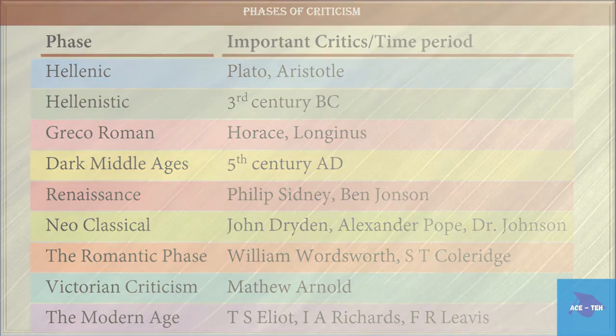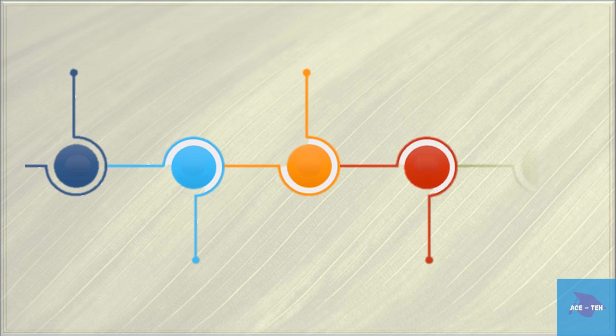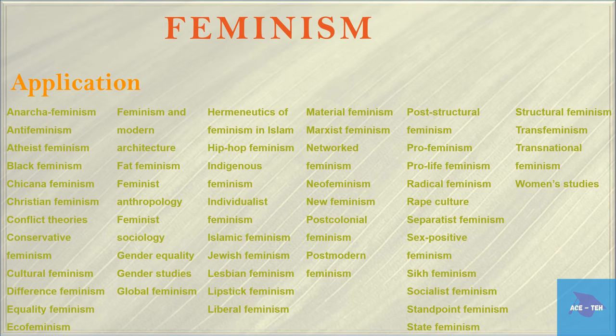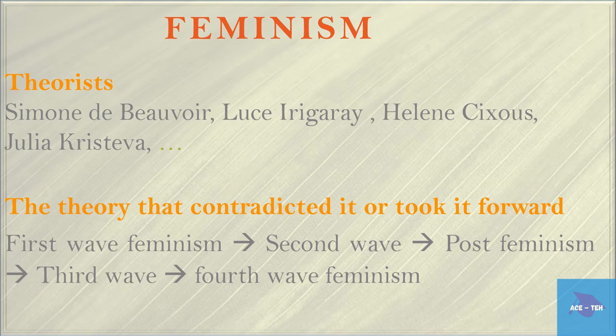So we have seen what theory and criticism are and why we need to study them. Now we move on to how to study them. Students always ask the question of whether you should study theory chronologically. Not necessarily. You don't need to know one theory to understand the other. However, a chronological understanding will provide for a necessary background. When you learn a particular theory, ensure you have covered the following topics about it. The main idea of the theory, its domain, the application, the major figures, and last, the theory that contradicted it or took it forward.